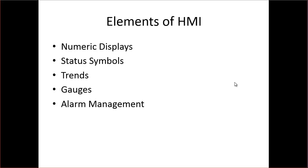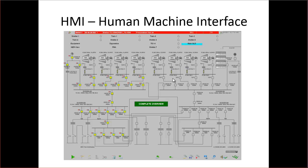The elements of an HMI display include numeric values — things like your voltages and currents. There are also status symbols indicating whether a switch is open or closed, a breaker is open or closed, or a generator is operating. You can see numeric displays right here with values being read and displayed on the screen. The status symbols are all these symbols on here, and it's common for these to be animated — you can see breakers open and close, or colors change to indicate whether they're open or closed.